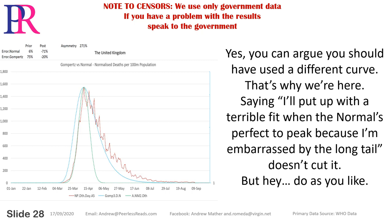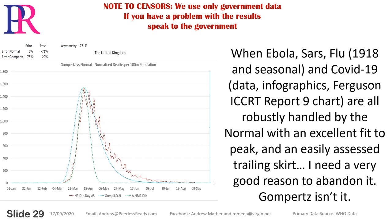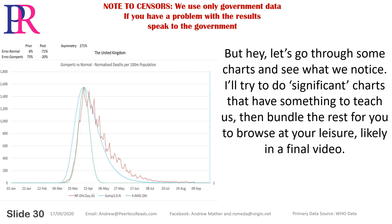You can argue you should use a different curve — that's why we're here. Saying I'll put up with a terrible fit when the normal's perfect to peak because I'm embarrassed by the long tail doesn't cut it. When Ebola, SARS, flu, 1918 seasonal, and COVID-19 data infographics — Ferguson, ICCRT report 9 chart — are all robustly handled by the normal with an excellent fit to peak and an easily assessed trailing skirt, I need a very good reason to abandon it. Gompertz isn't it.